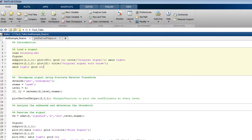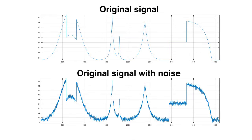Let us load a signal and plot it in MATLAB. There are two signals here. The first is the original signal and the second one is the original signal with some noise added to it.